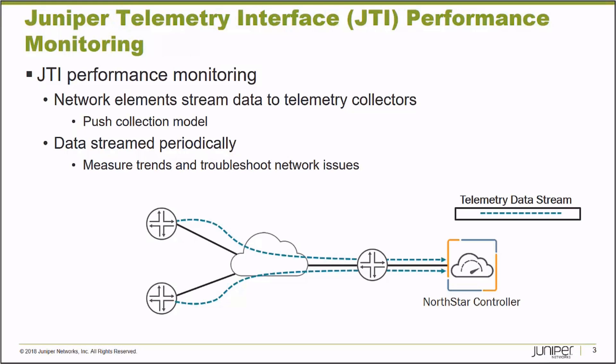The Northstar Controller can also take action based on an analysis of the telemetry data received in your network. You as an administrator can configure utilization thresholds on your network, so if certain points of your network reach an over-utilization point, the Northstar Controller can dynamically signal label switch paths to reroute around points of congestion.